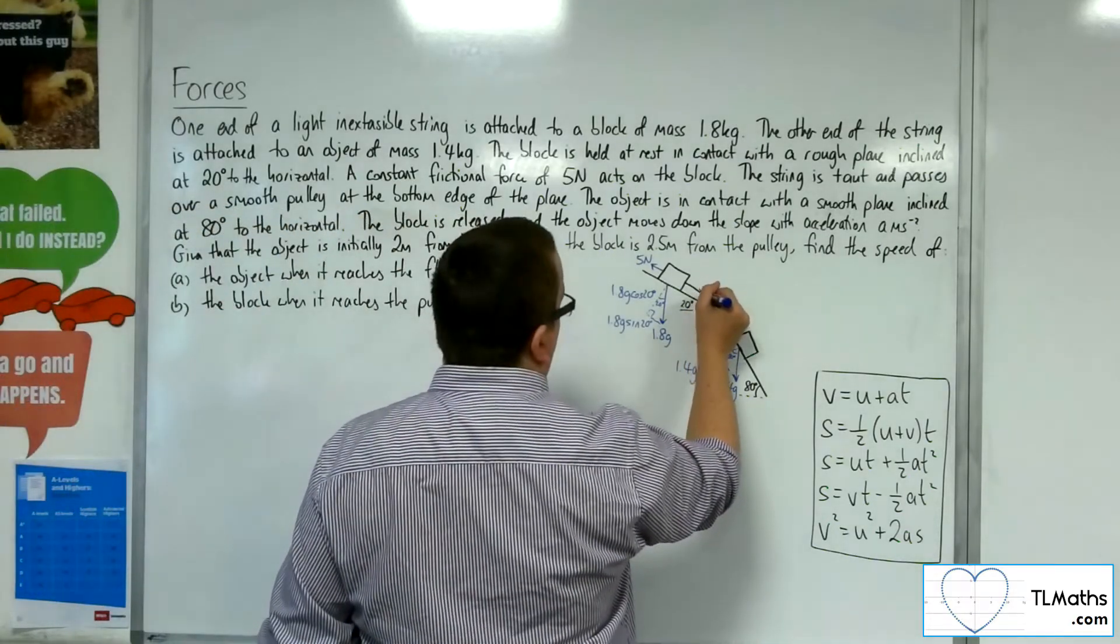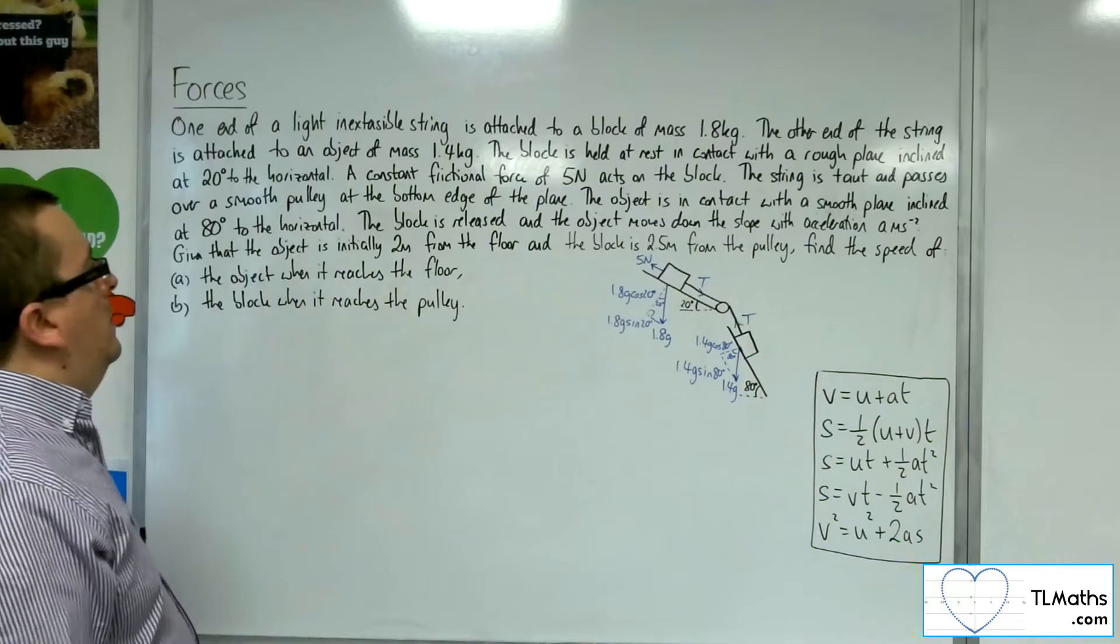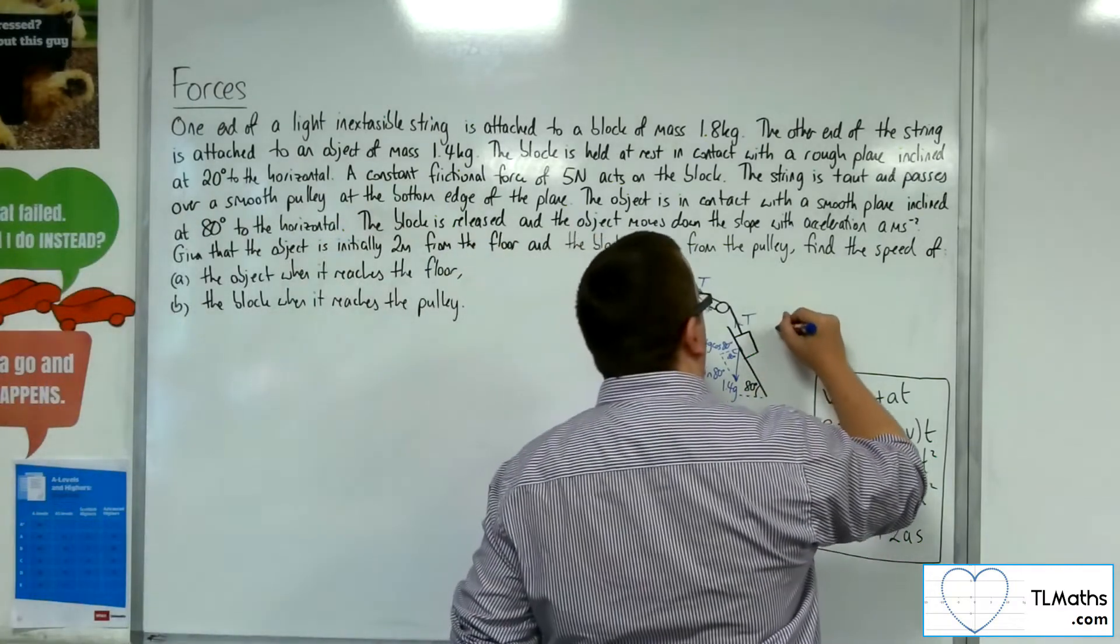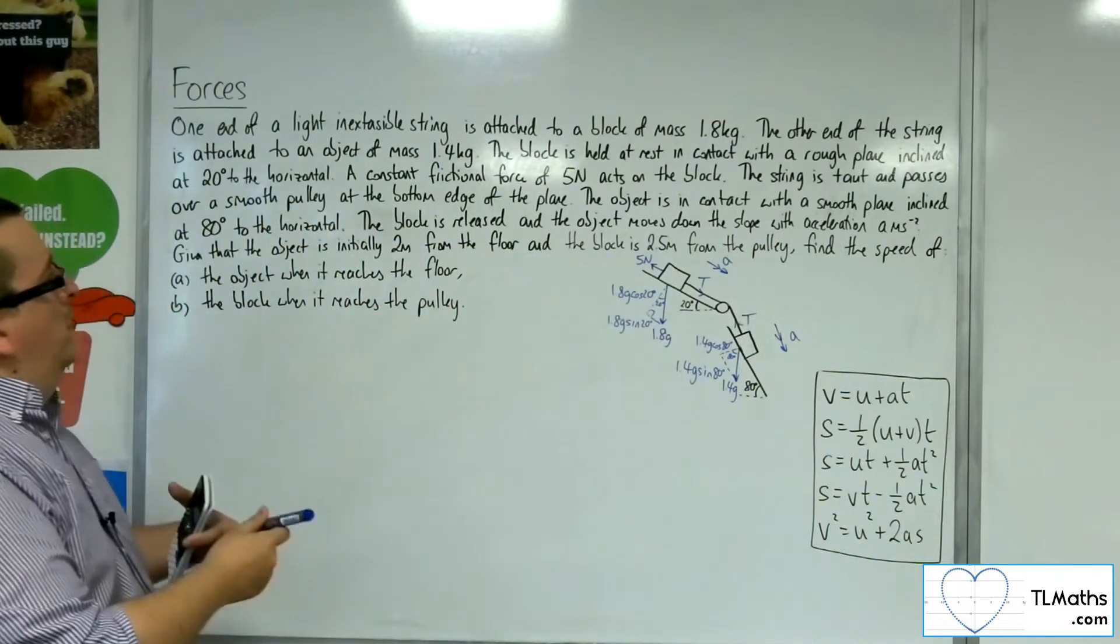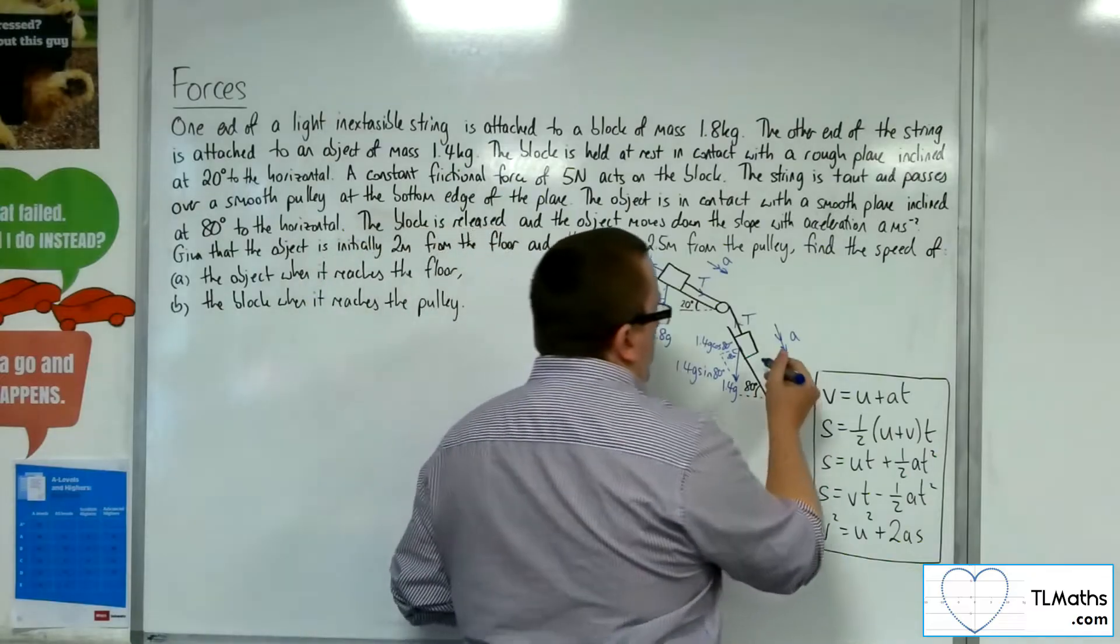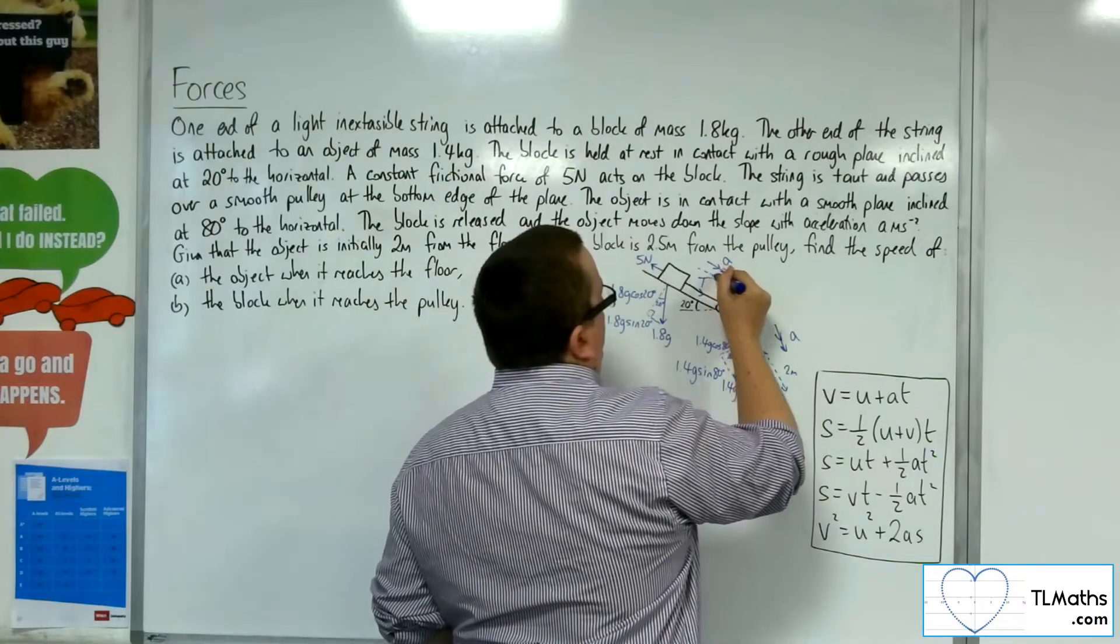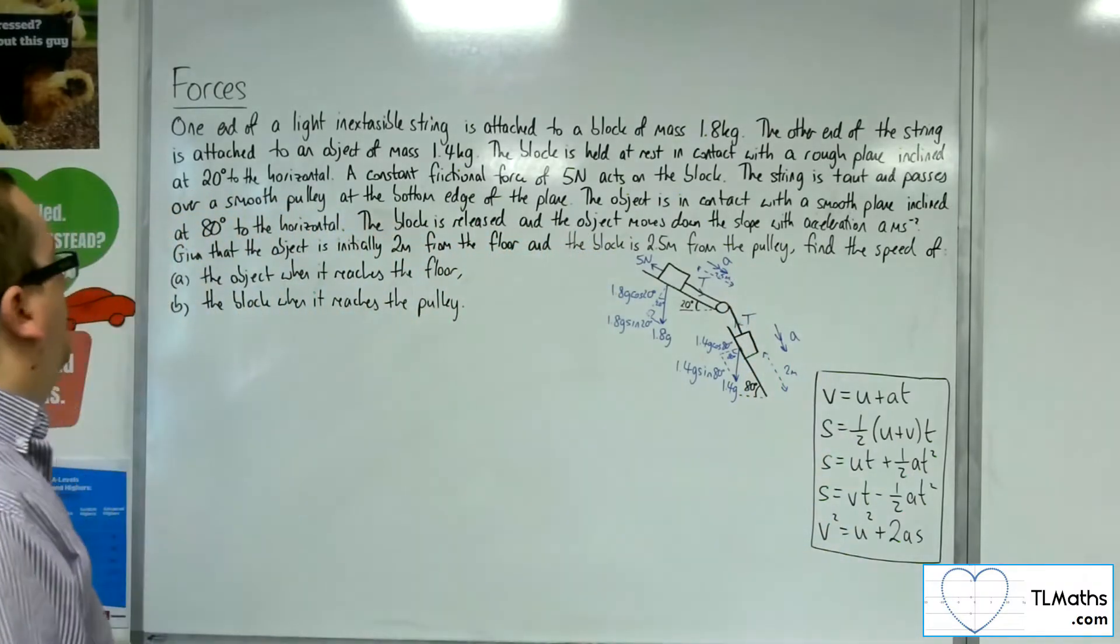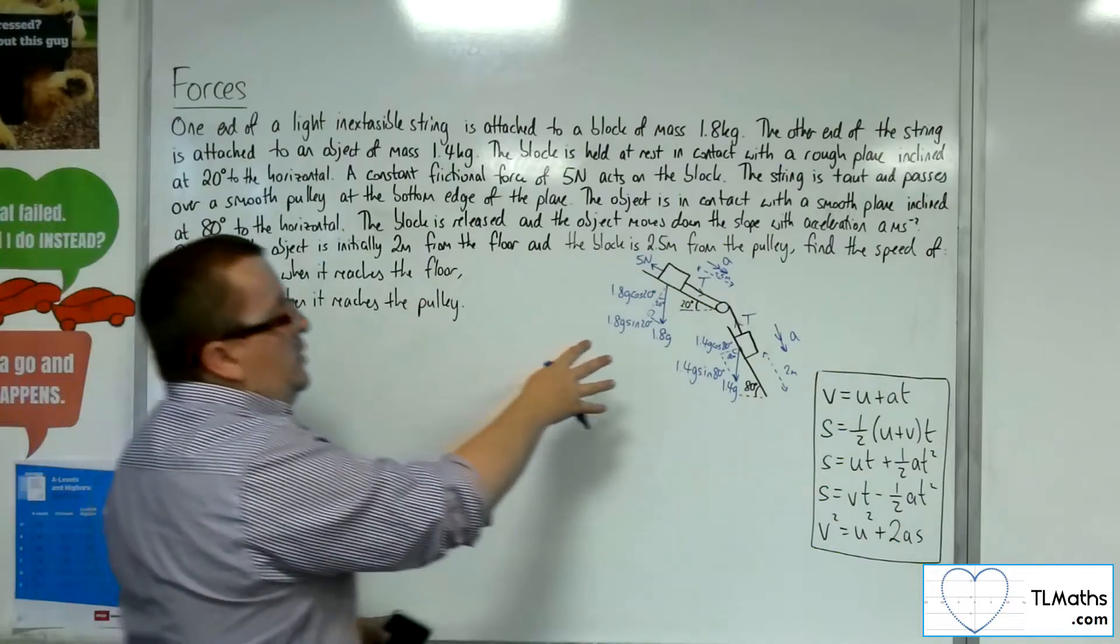There'll be tension in the string. The block is released and the object moves down the slope with acceleration a meters per second squared. The object is initially 2 meters from the floor and the block is 2.5 meters from the pulley. Find the speed of the object when it reaches the floor and the speed of the block when it reaches the pulley. This is the complicated looking picture we've got.